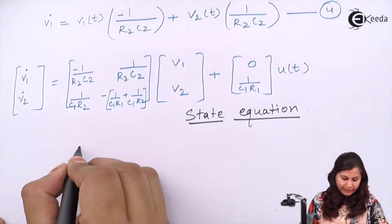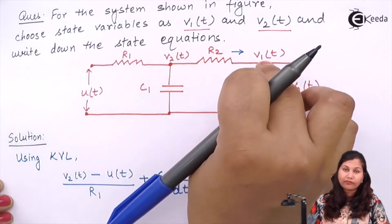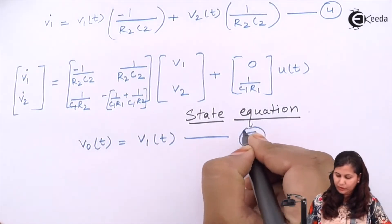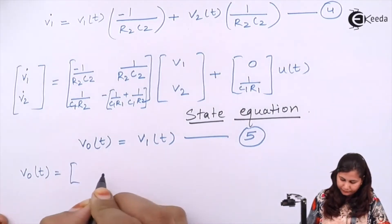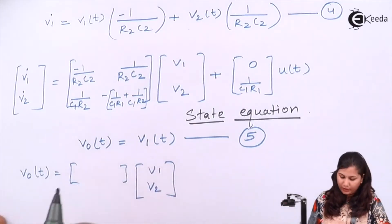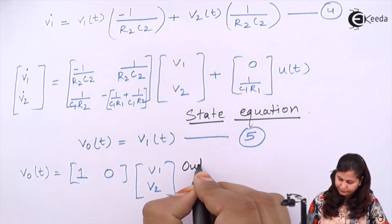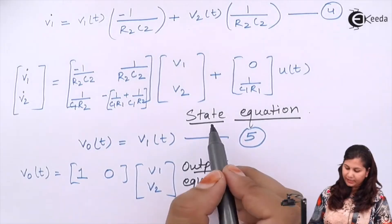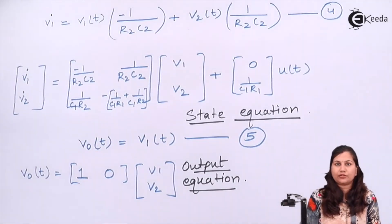Now the output is v0(t). From the diagram, v0(t) equals v1(t), which is our fifth equation. From this we write the output equation: v0(t) equals [1, 0] times [v1; v2]. The coefficient of v1 is 1 and v2 is not present so it is 0. This is our output equation. The state equation and output equation together constitute the state model, or the state space representation, of the system.